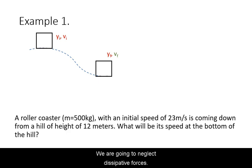We are going to neglect dissipative forces. A roller coaster with a known initial speed is going downhill and we want to figure out its speed at the bottom of a hill.